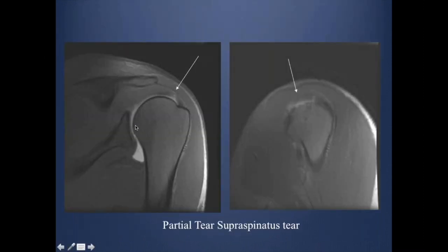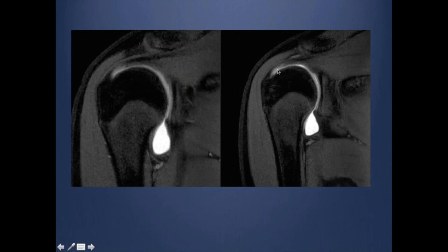This is a case of arthrogram. You can see that some contrast is actually extending through the substance of the tendon, indicating an articular surface partial thickness tear, which gives an axis for contrast to enter. Another example shows how arthrogram can be more superior in demonstrating the articular surface partial thickness tear, usually low-grade.